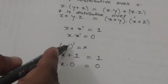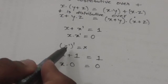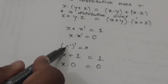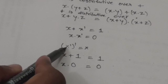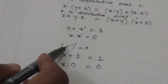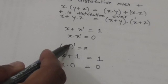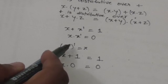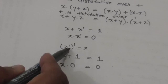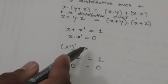The complement of x' equals x. If the value of x is 0, then x' will be 1, and the complement of 1 will be 0, so the expression equals 0. If the value of x is 1, then x' will be 0, and the complement of 0 will be 1. So the value of this expression always equals x, confirming the double complement law.